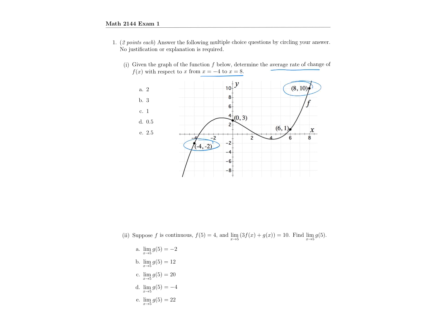So we have this point here and this point here. Remember the average rate of change we can find by using that slope formula. If we were to draw a secant line on this curve, we can find the average rate of change. Our slope formula is going to be the change in y's over change in x's. So we're going to have f of 8 minus f of negative 4 over 8 minus negative 4. Well, f of 8 is going to be 10, and f of negative 4 is negative 2. The bottom is going to come out to be 8 plus 4, so we're going to get 12 over 12, which means our average rate of change between these two points is going to be 1.